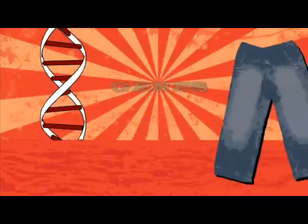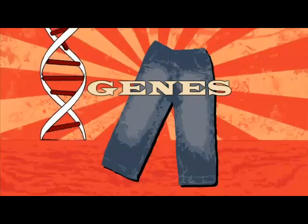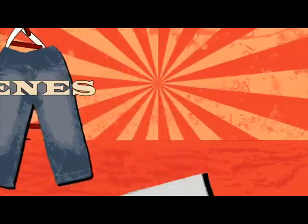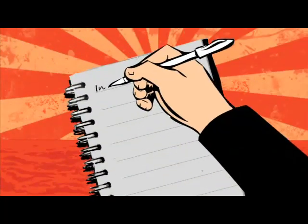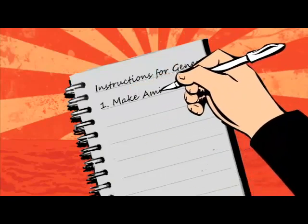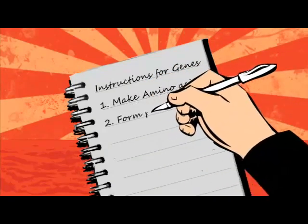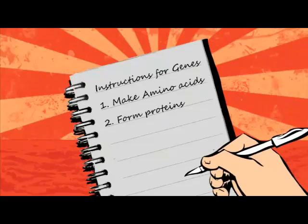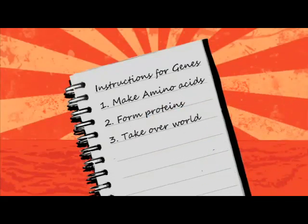Short sections of DNA are called genes. Each gene has a specific purpose — it has the instructions for making a particular amino acid. These join in a particular order, again controlled by the genes, to form proteins. So genes control proteins, which is how living things are made.